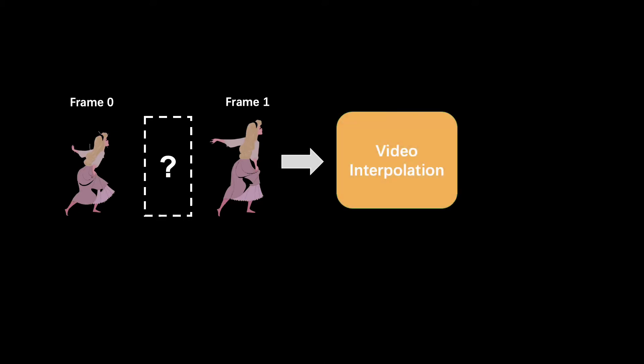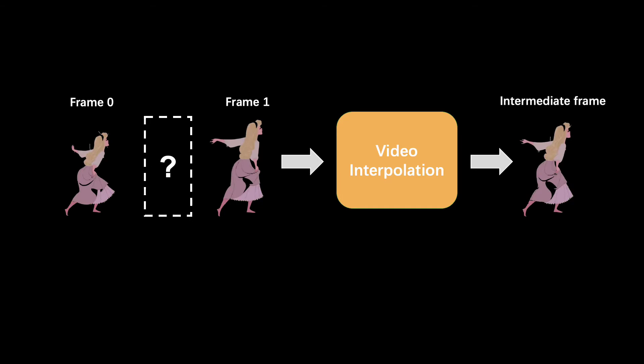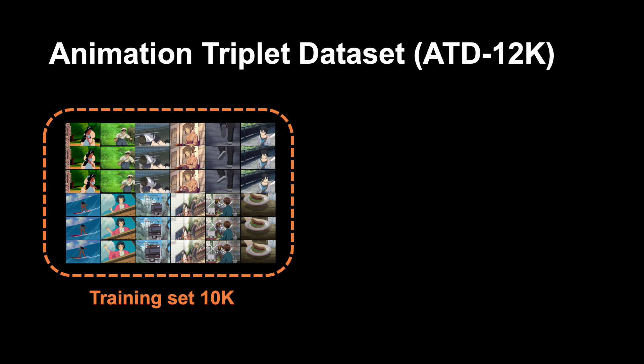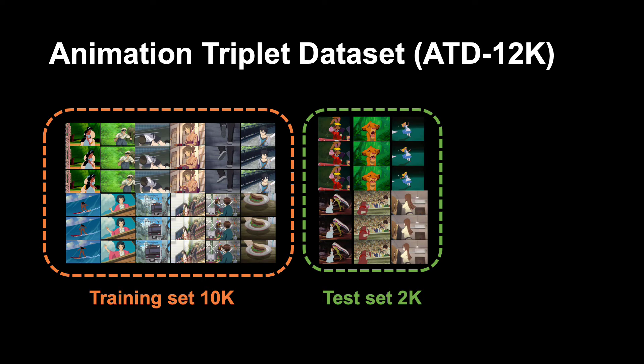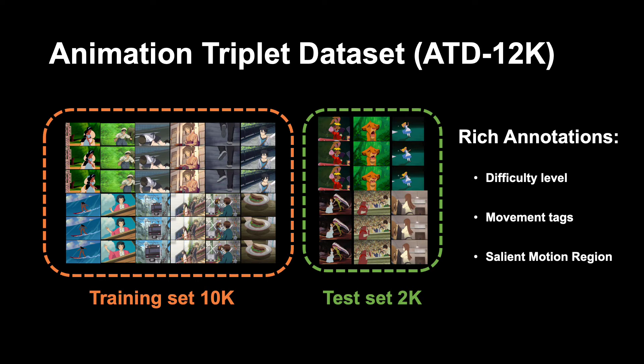Therefore, it is highly desirable to invent a method to automatically generate intermediate frames and hence increase the frame rate. To facilitate this task, we built a large-scale and high-quality dataset named ATD12K, where 10,000 triplets are used for training and 2,000 from different animation sources are set for evaluation. Rich annotations are also provided for further analysis.